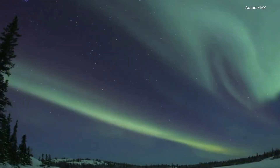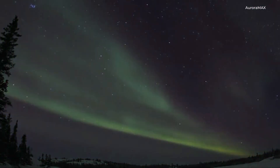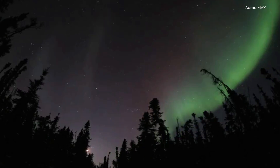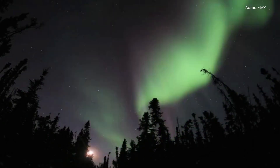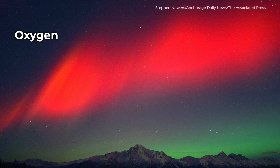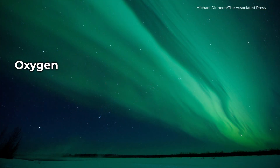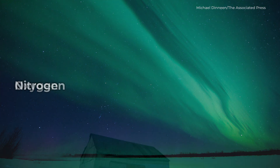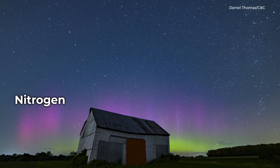Depending on where the particles are in the atmosphere, they create different colors of light. Oxygen particles high in the atmosphere emit red light, while oxygen particles lower down emit green light. Nitrogen particles often produce shades of blue and purple.